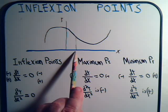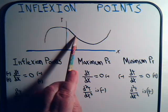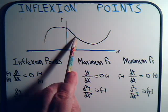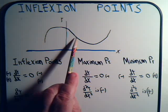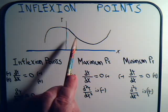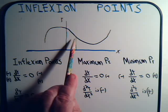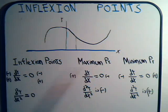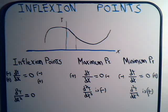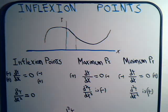But at that inflection point, the slope of the first derivative is not zero. So how can we identify these kinds of inflection points? The rule is that for any kind of inflection point, the second derivative is going to be zero.